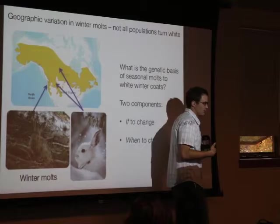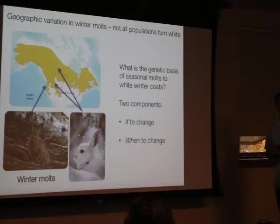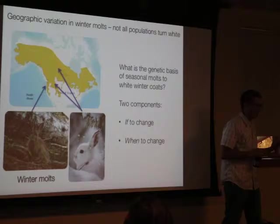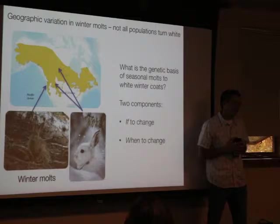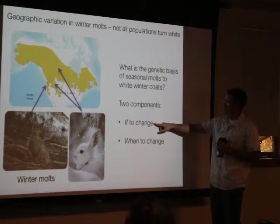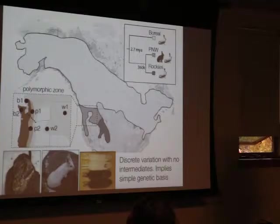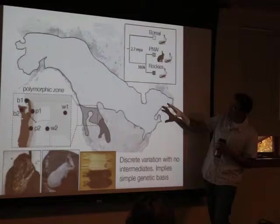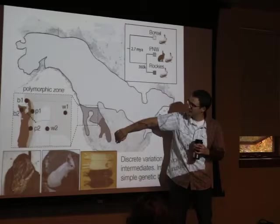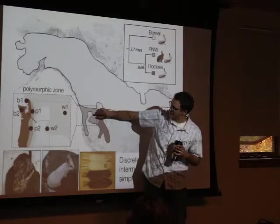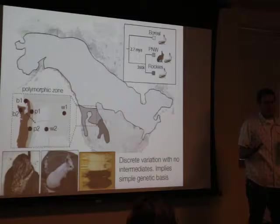There should be strong selection to maintain this crypsis character. There's also geographic variation in winter molts — not all populations turn white. Most snowshoe hare populations do turn white, and the timing shows evidence for local adaptation along environmental/climate gradients. But populations along the coast have lost the ability to turn white, remaining brown year-round, in areas where snowfall is more ephemeral. So there are two interesting genetic components: if to change and when to change. We're interested in both, and I'll focus on some recent work on 'if to change,' research led by Matt Jones.